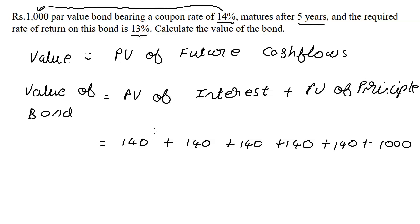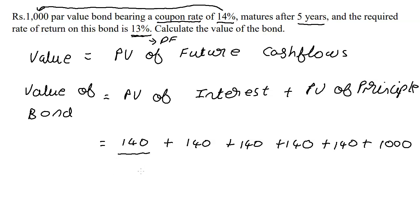To find the present value, we make use of the required rate of return — that's why it's given to us. Always remember: the coupon rate is the interest rate, and the 13% here is your discount factor. So 13% = 0.13, meaning 1 + r = 1 + 0.13 = 1.13.